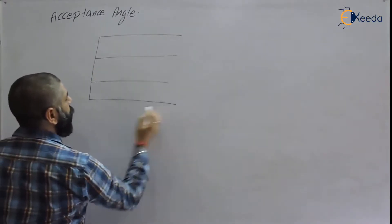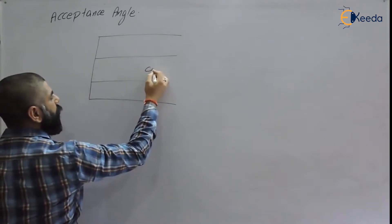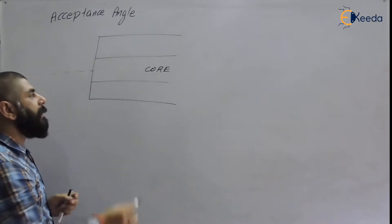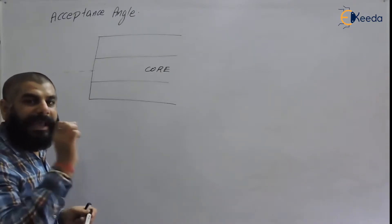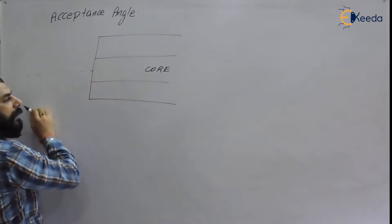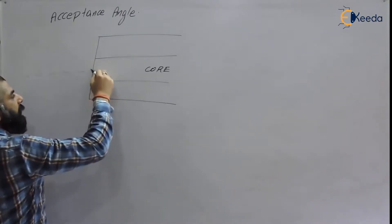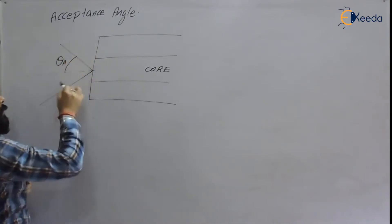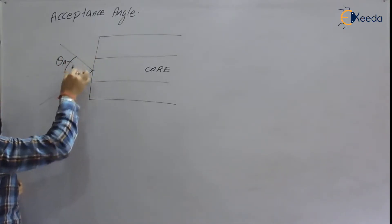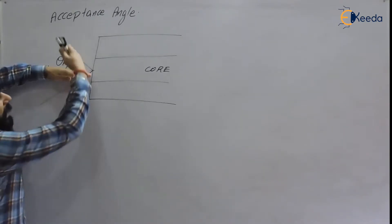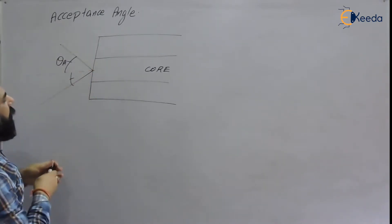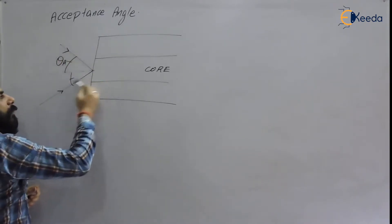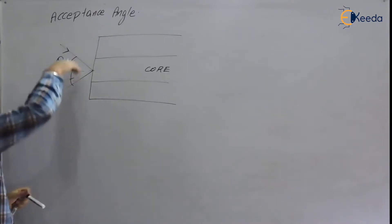This is our optical fiber — this is the core and the outer part is the cladding. Light will propagate through the core. The acceptance angle is the maximum angle with the axis of the optical fiber at which light can enter. Light can enter either this way or this way, so this maximum angle is the acceptance angle.